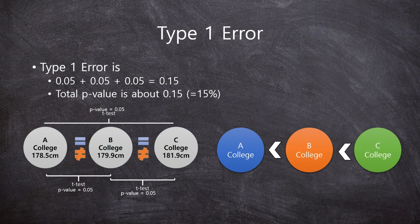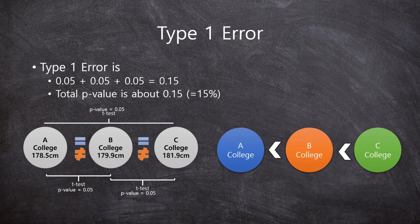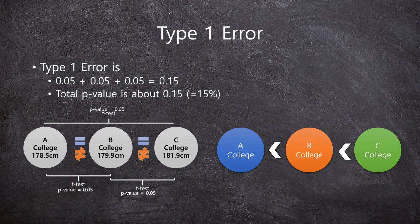Our total p-value is here about 0.15, 15%, not 5%, because we did 3 times t-test.